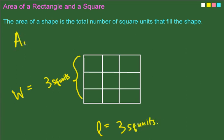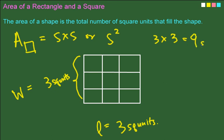That's why for the area of a square, you just do side times side, or side squared. So what's the area of this square? Tell me. Excellent. 3 times 3, which gives you 9 square units, or you can do 3 squared and also get 9 square units.